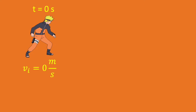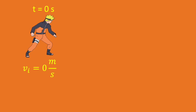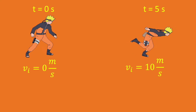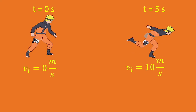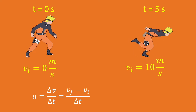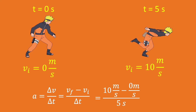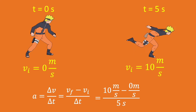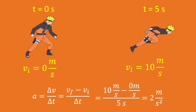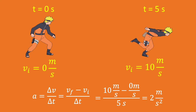Here's a quick calculation of acceleration. We have Naruto — he's at rest, so at time zero, velocity is zero. Five seconds later his velocity increased, so he accelerated. To find acceleration, it's change in velocity over change in time. Final velocity of 10 minus initial velocity of zero, over time of 5. Plugging in numbers, it's 10 over 5, so his acceleration is 2 meters per second squared.